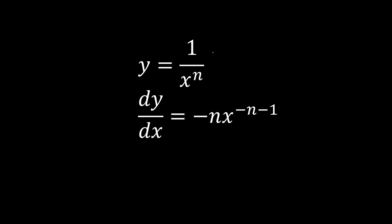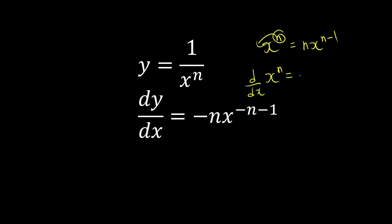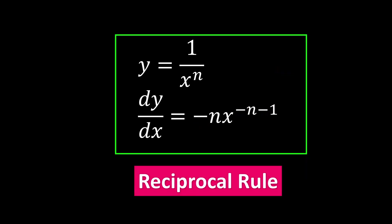Sometimes we don't prefer to use the fraction form — we prefer something like a horizontal expression. This is almost the same as the power rule where x to the power of n becomes n times x to the power of n minus 1, right? But whenever you see a reciprocal, the easy way is to make everything negative. So it becomes negative n times x to the power of negative n minus 1. Everything becomes negative — this is what we call the reciprocal rule.